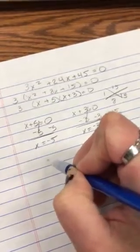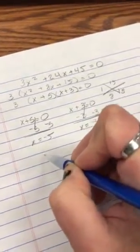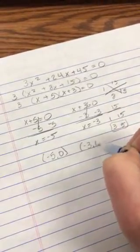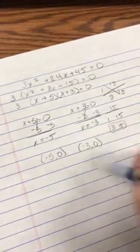Those are your two answers. They can be written two different ways. Those are the zeros, the solutions, the roots. So I have negative 5, 0, and I have negative 3, 0. Or just x equals negative 3 and x equals negative 5.